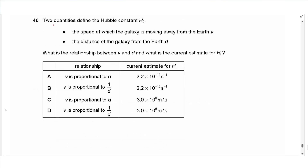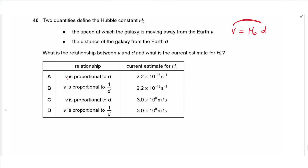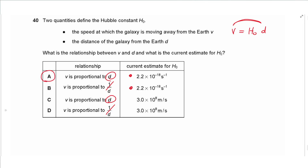Question 40: the Hubble constant H₀ relates the speed at which a galaxy moves away from Earth to its distance D. The Hubble equation is V = H₀ × D, so speed is directly proportional to distance. The Hubble constant is approximately 2.2 × 10⁻¹⁸. The answer is A.